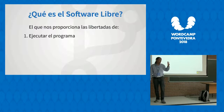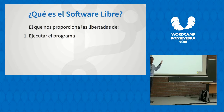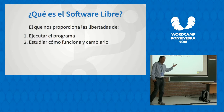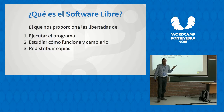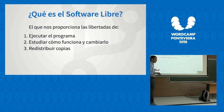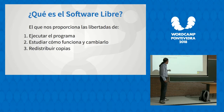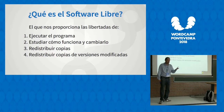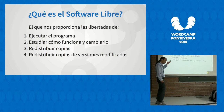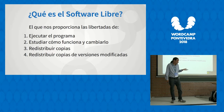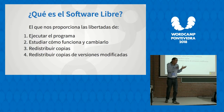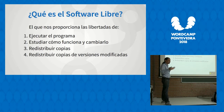El software libre es el que nos proporciona, sobre todo, cuatro libertades. La primera: ejecutar el programa. La segunda: estudiar cómo funciona y poder cambiarlo — aquí ya empezamos a diferir con otros tipos de software. La tercera: redistribuir copias — WordPress, Joomla y muchísimos otros CMS se redistribuyen de forma gratuita. Y la cuarta: redistribuir copias de versiones modificadas. Es decir, puedo coger WordPress, modificarlo y redistribuirlo — incluso puedo cobrar por él. La licencia lo permite.